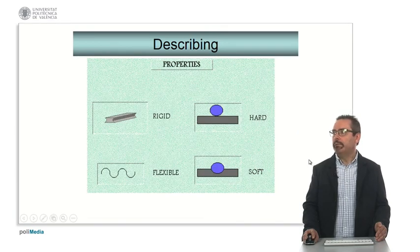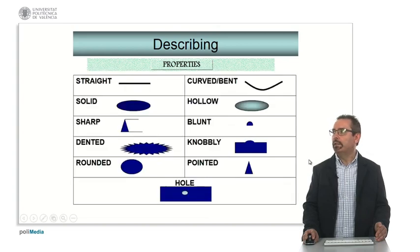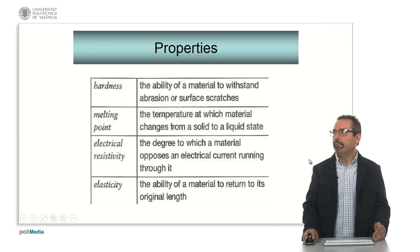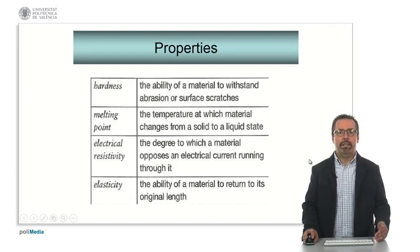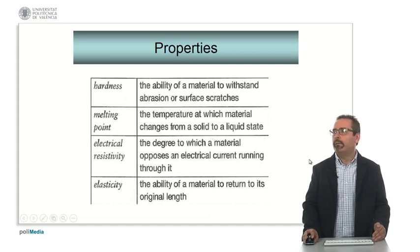Here we have some other engineering properties, rigid, hard, flexible, soft. Or, here we have another list of typical engineering, typical properties to describe objects. You have to check whether you understand them, but these are presented here in a quite graphical way.